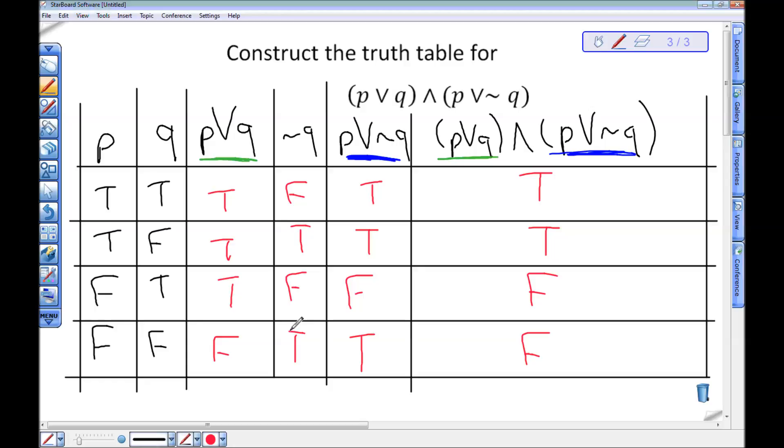Now it's worth noting here that this statement that we just made the truth table for is true exactly when P is true. In fact, it matches the column for P exactly. We'll talk about this a little later, but that means these statements are equivalent. And it means that I could have replaced that statement we just made this big truth table for with just P.